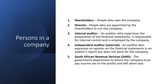Some persons that make up a company are shareholders, directors, internal auditors, independent auditors, and sales. Shareholders are people who own the company — people who have bought shares in the company. Directors are people who are appointed by the shareholders to run the company, usually appointed in the annual general meeting, also referred to as AGM. An internal auditor is usually the person employed by a company who supervises the preparation of the company's financial statements. Independent auditors or external auditors express an opinion on the financial statements in an audit report, but do not work for the company.